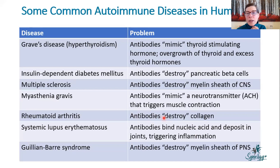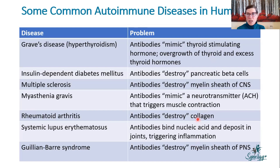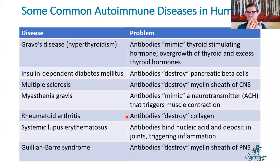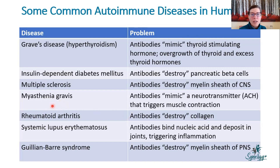Any auto-antibodies, when depositing and binding to foreign things or your own cells, always trigger an inflammatory response. In rheumatoid arthritis, beyond destroying collagen, there's so much inflammation and pain that patients don't want to move their joints, causing them to deteriorate. Rheumatoid arthritis is quite common but also really debilitating.